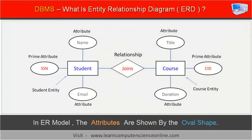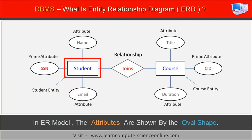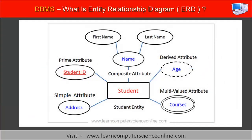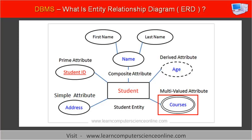In the ER model, the attributes of an entity are indicated by an oval shape connected to the entity rectangle by a straight line. Different types of attributes are indicated differently in the ER diagram. The different types of attributes include: Prime attribute, Non-prime attribute, Simple attribute, Composite attribute, Derived attribute, Single-value attribute, and Multi-valued attribute. These different attribute types are shown using various variations of an oval shape.